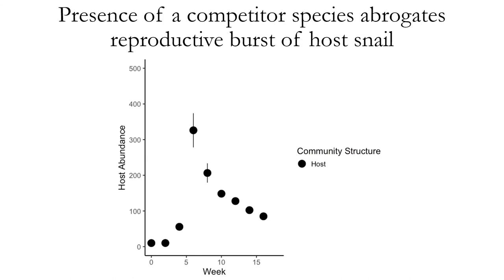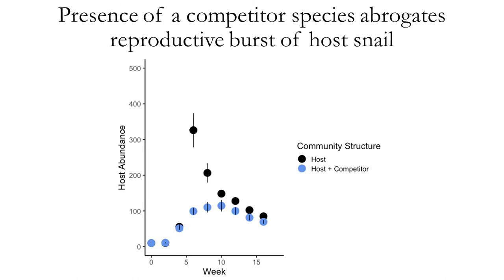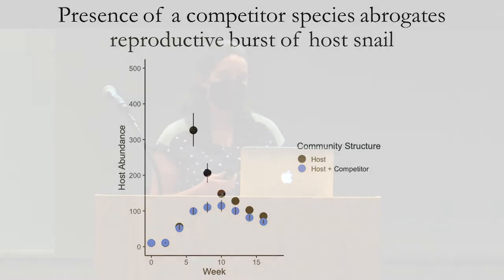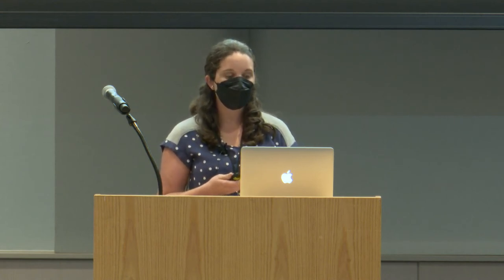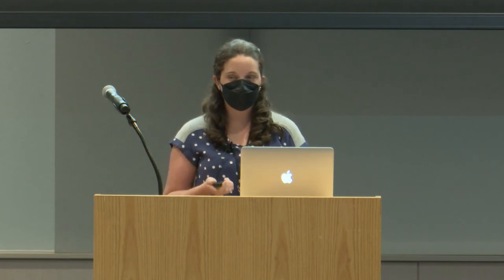Looking at just the host snail population dynamics: snails in host-only tanks were seeded at relatively low abundances, had a reproductive burst early in the experiment, but then those large numbers competed for resources and settled at a lower abundance. However, in tanks where hosts had competitors present, this reproductive burst didn't happen to nearly the same degree — some juveniles entered the population at roughly the same time but at a much lower level — yet interestingly they ended up at a pretty similar final abundance.